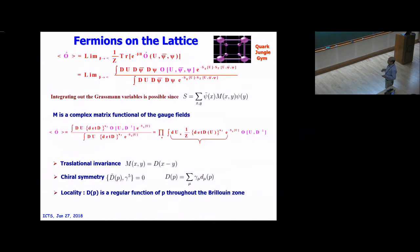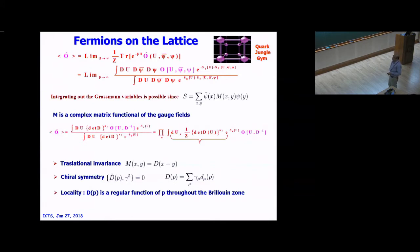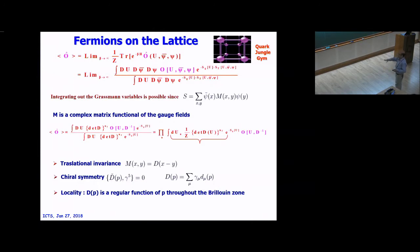Now you want to show how to discretize the fermion action. Remember, you have to preserve certain symmetries like translational symmetry — on the lattice this becomes discrete translational symmetry. Chiral symmetry in the continuum is γ₅ D + D γ₅ = 0. Locality means the kernel is a regular function of p throughout the Brillouin zone. These things you have to preserve while you discretize the fermion action.